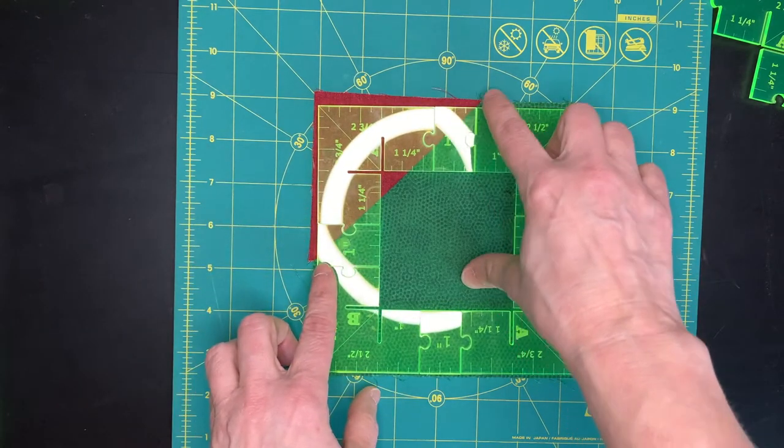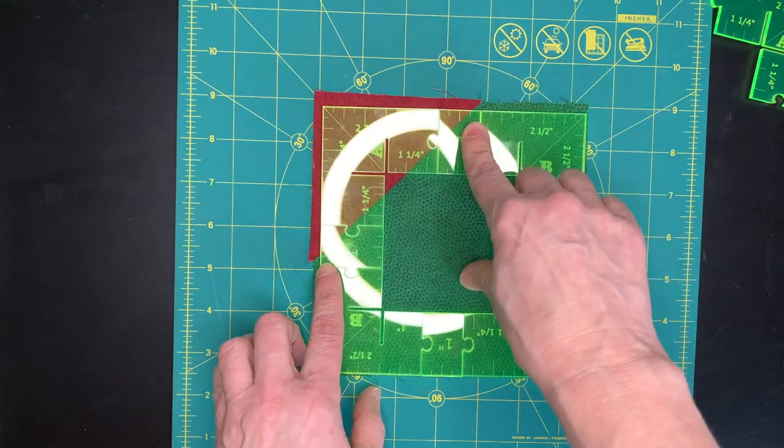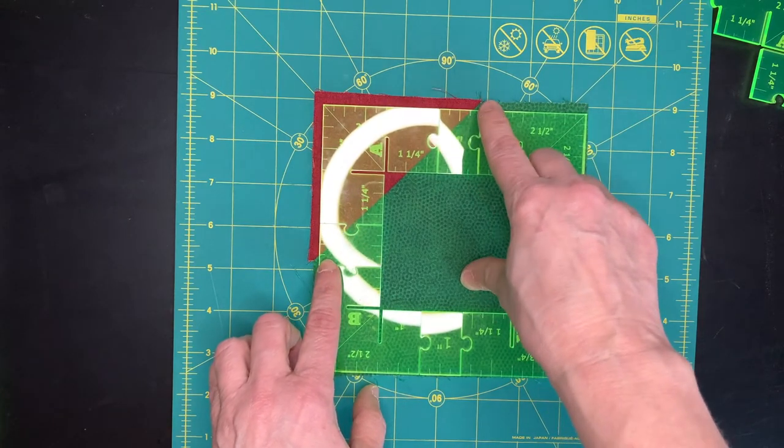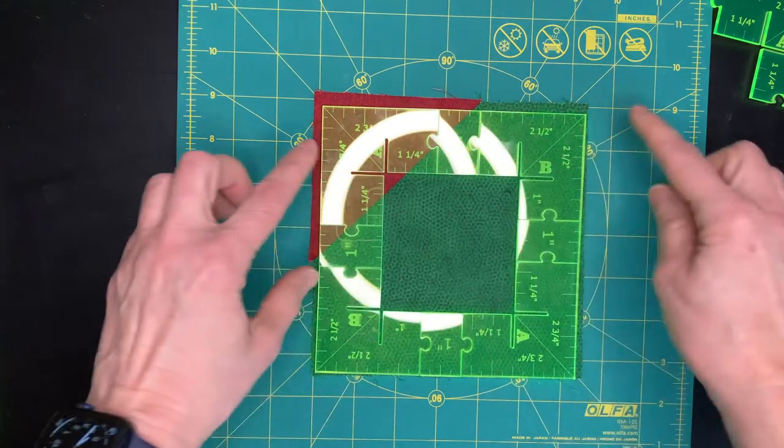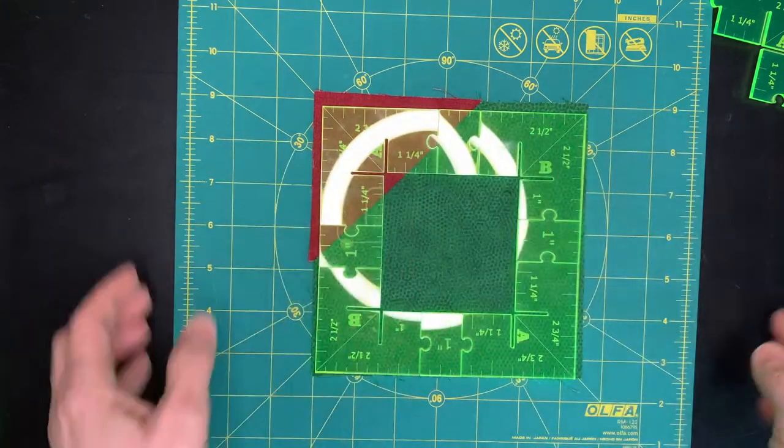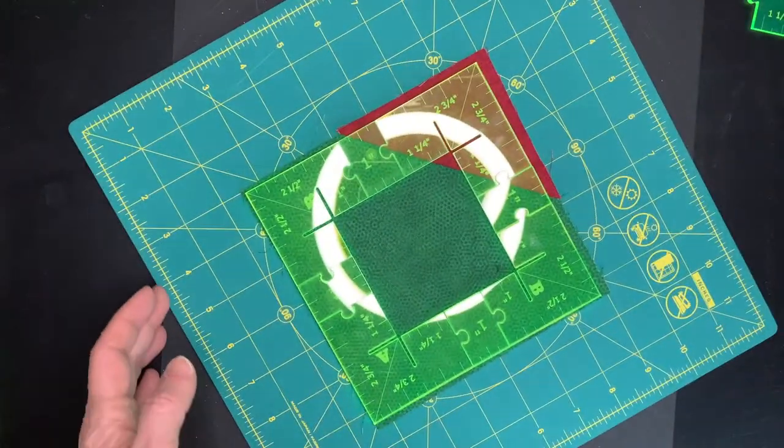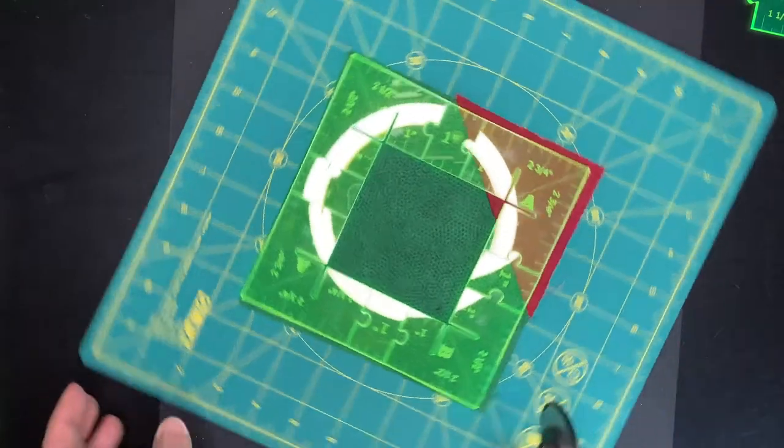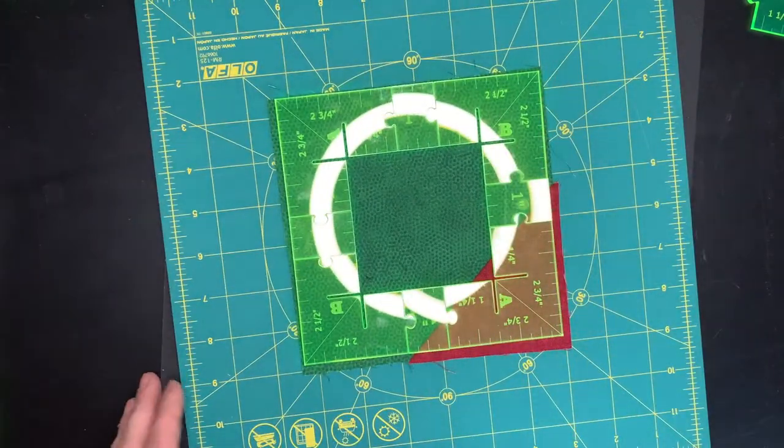And again, I can line up. I can use the notches and my rulers to line up my markings to get it perfectly even and then trim with my cutter. Trim, trim, trim, trim, and be done.